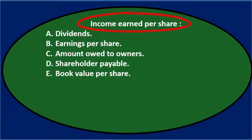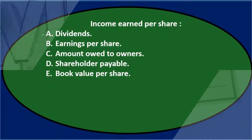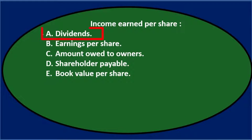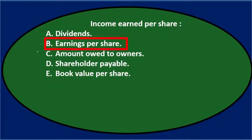Income earned per share — A. dividends. You might think it's dividends because if we got income from the corporation, you would think they would pay that to the owners like a dividend, so maybe we'll keep dividends for now. B. earnings per share — which sounds reasonable since it says income earned per share, earnings per share. Sounds kind of reasonable, I'll keep that for now.